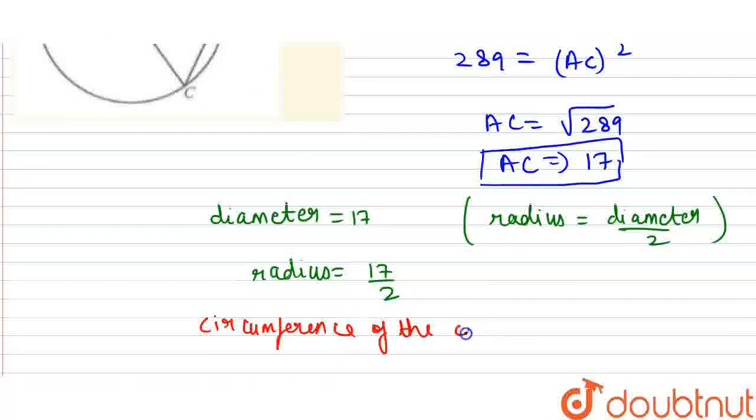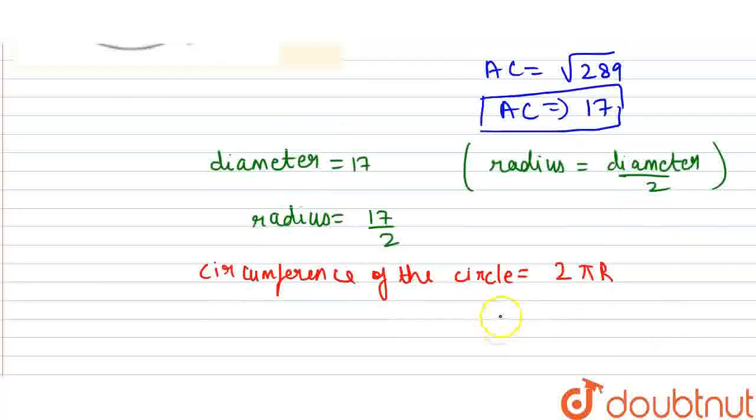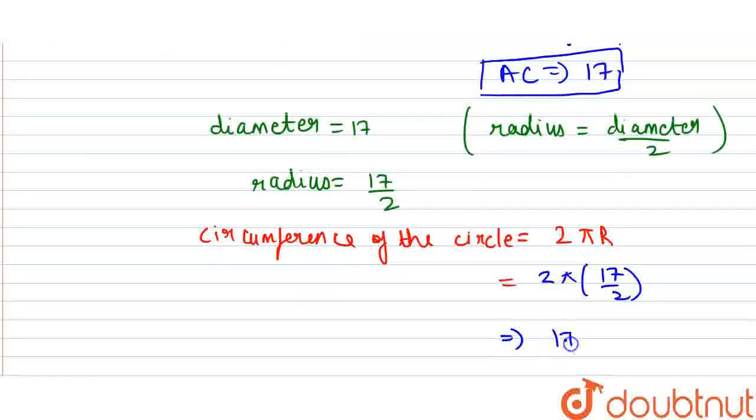The formula for circumference is 2πr. Substituting the value of r: 2π × (17/2) = 17π. This is the final answer—the circumference of the circle is 17π.